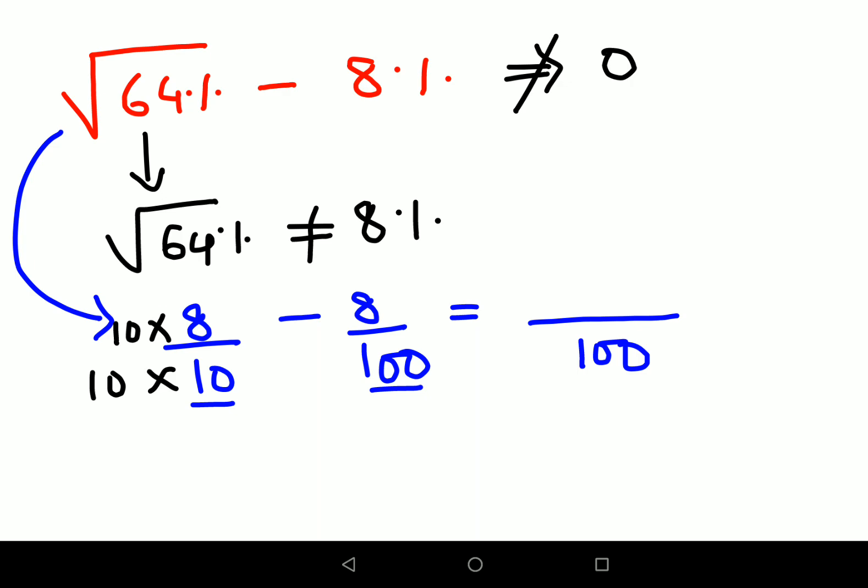So when you multiply the new denominator, you obviously have to multiply the numerator as well. So 8 into 10 is 80 minus 8. Now please understand when the denominators become same, you can directly do the subtraction. So final answer is 72 upon 100.